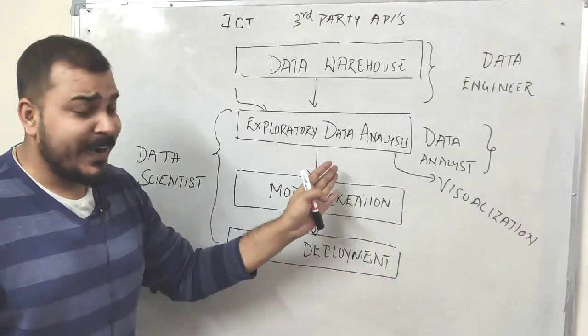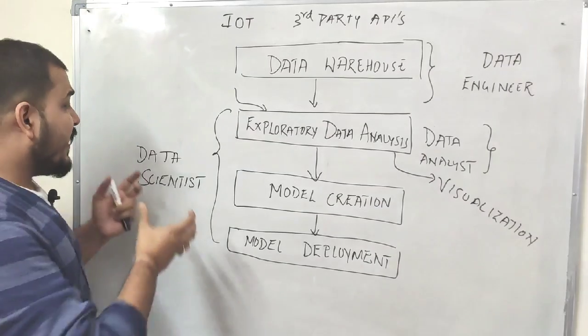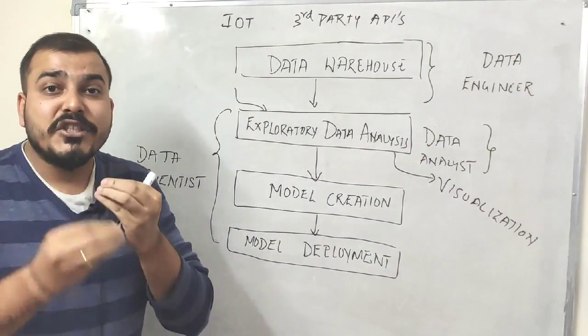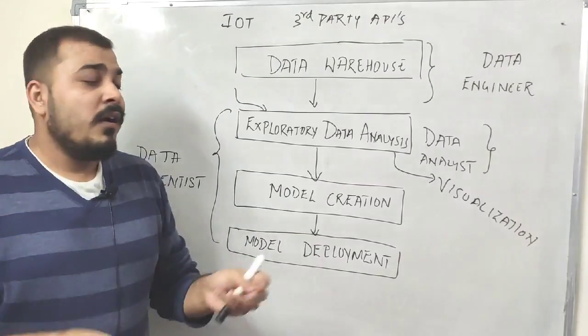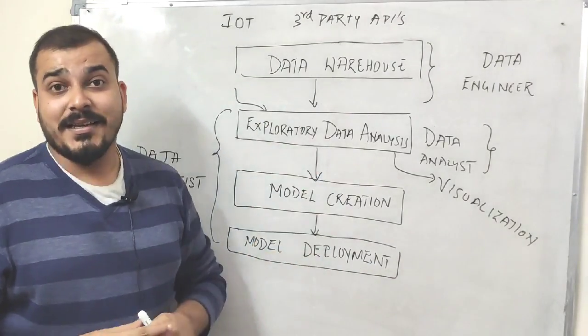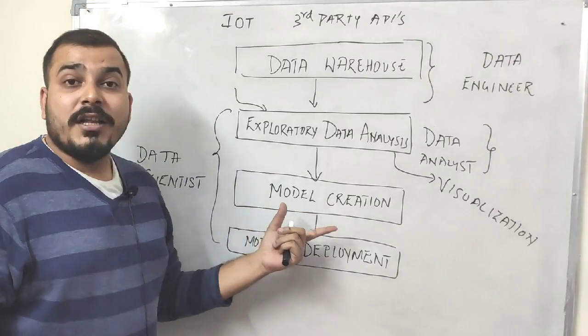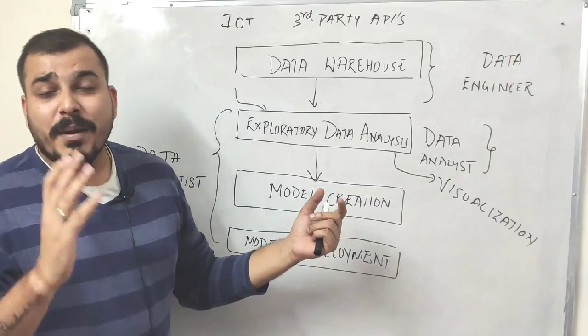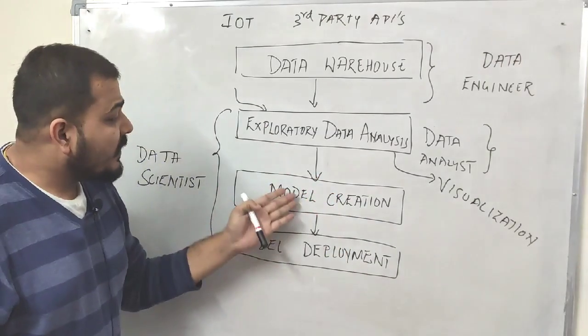After doing the exploratory data analysis, it is the work of the data scientist who will decide which machine learning algorithm to use for this specific data based on the statistical analysis. Then they select a model and create it through machine learning or deep learning algorithms.